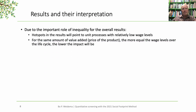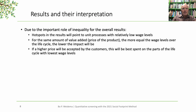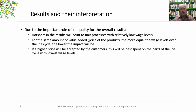For the same amount of value added — that is, the price of the product — the more equal the wage level over the life cycle, the lower the impact you will have. That means that if consumers are not willing to pay more, you can still move parts of your life cycle that have a high wage level and try to give some of that to the part of the life cycle with the low wage, and still keep the same price. But if a higher price will be accepted by customers, this will be best spent on the parts of the life cycle with the lowest wage levels. These very simple rules of thumb allow you to act on your results.